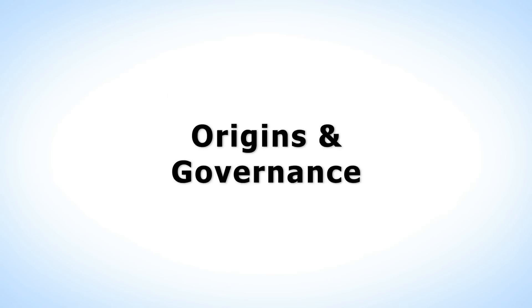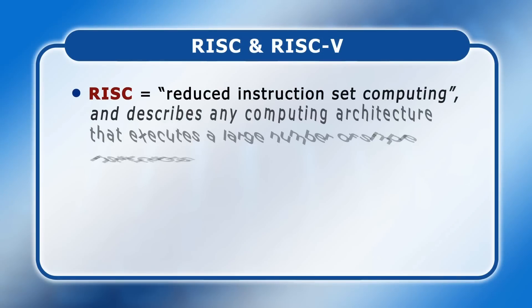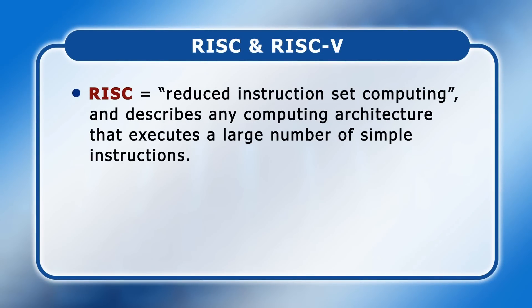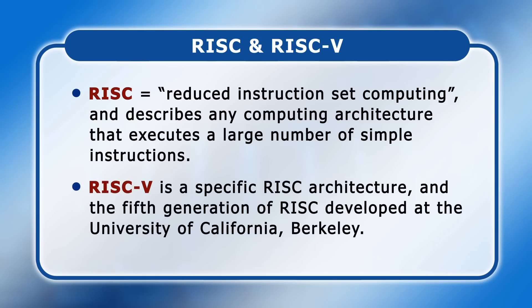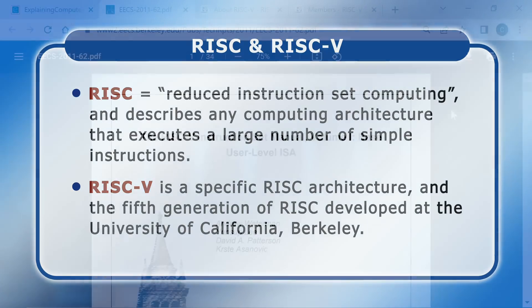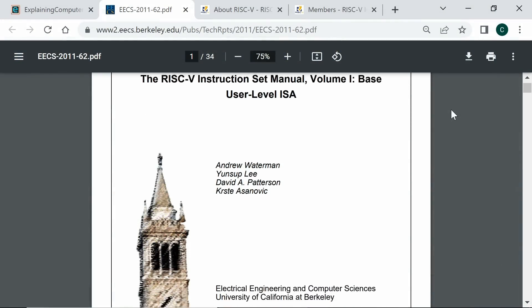So let's continue this update with a quick overview of RISC-V fundamentals. RISC stands for reduced instruction set computing and describes any computing architecture that executes a large number of simple instructions to complete tasks. However, RISC-V is a specific RISC processor architecture and the fifth generation of RISC developed at the University of California, Berkeley. RISC-V was created to support research and education, with its first instruction set manual published in May 2011.